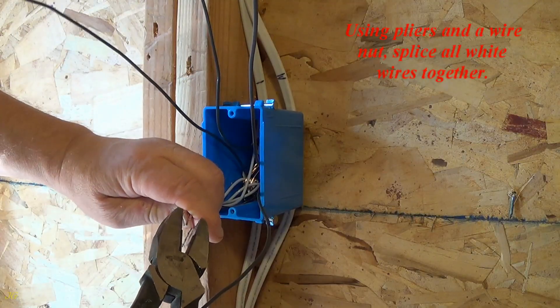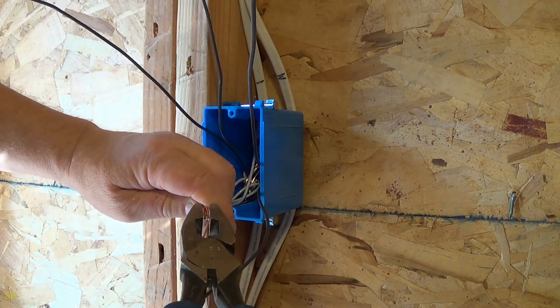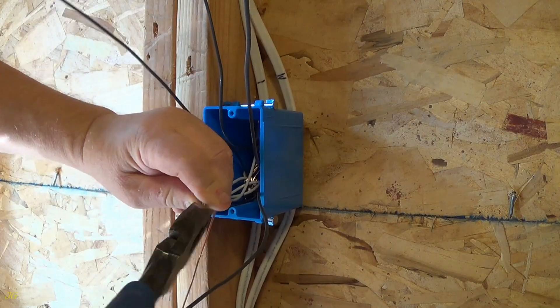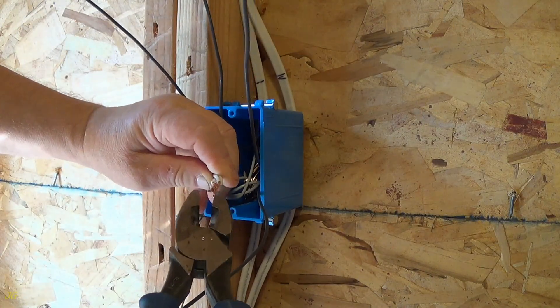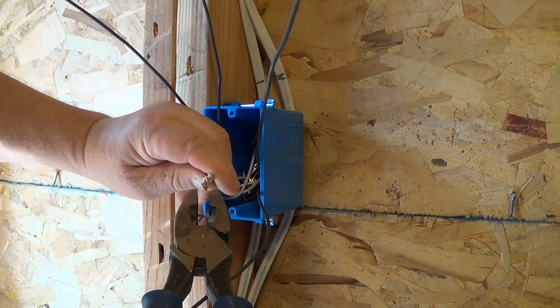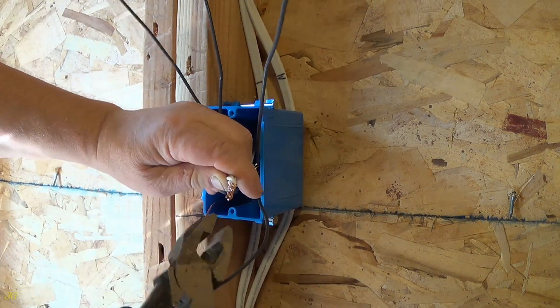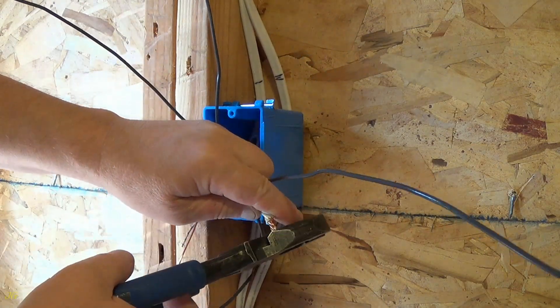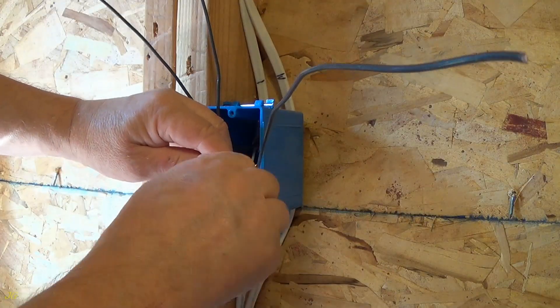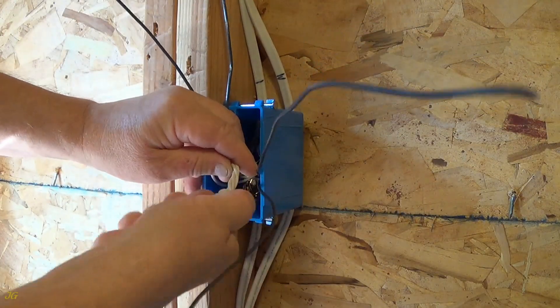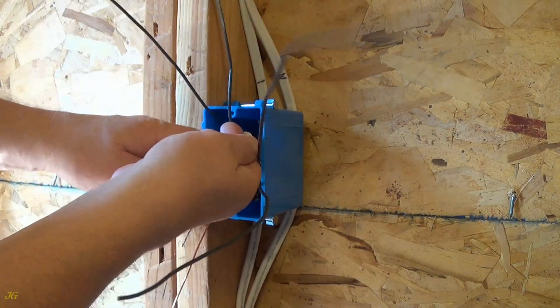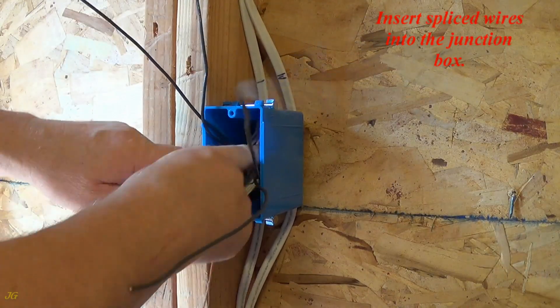Using pliers and a wire nut, splice all white wires together. Insert spliced wires into the junction box.